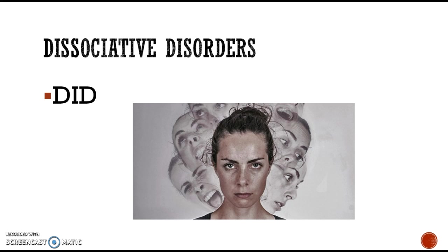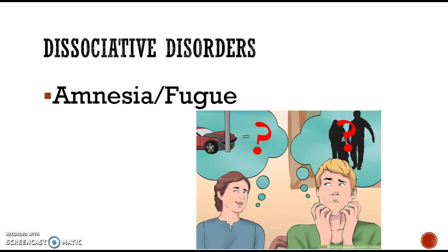The next category is dissociative disorders. DID — dissociative identity disorder, formerly called multiple personality disorder — is when someone has two or more distinct personalities. Dissociative amnesia and dissociative fugue usually follow some sort of trauma or stress. Amnesia is the inability to recall memories from a certain time period. Fugue involves an identity crisis where someone doesn't know who they are — some in a fugue state may even start a new life.